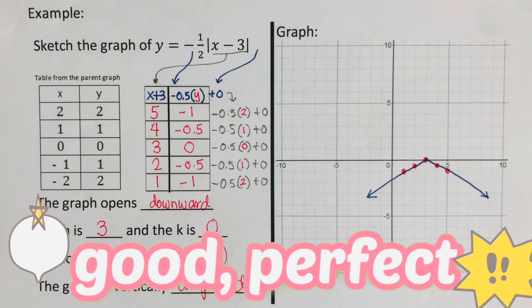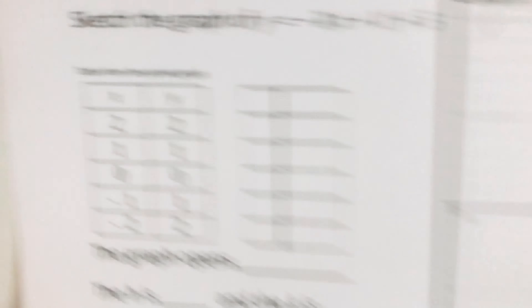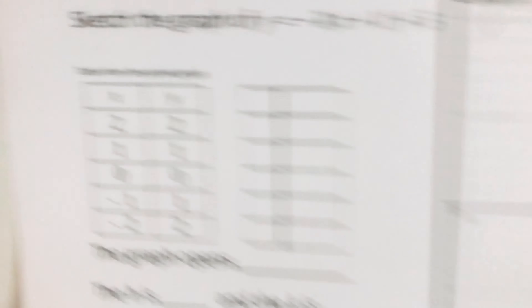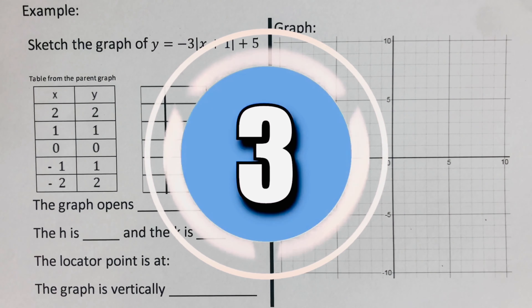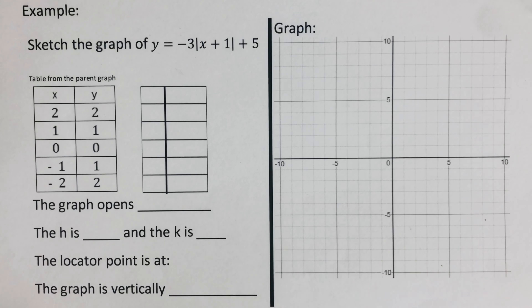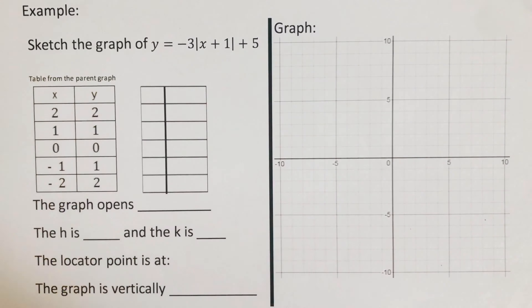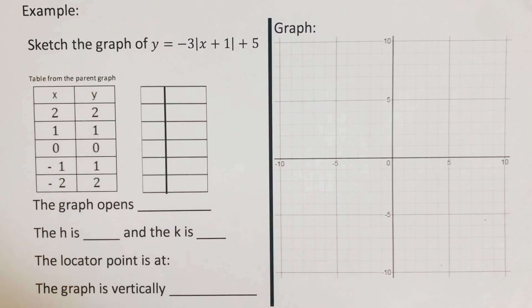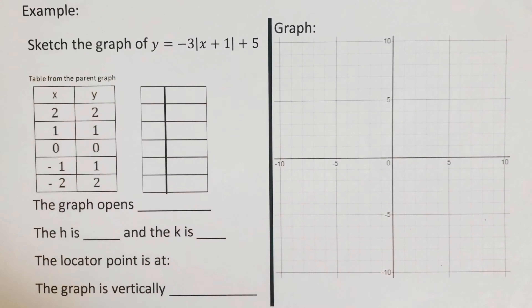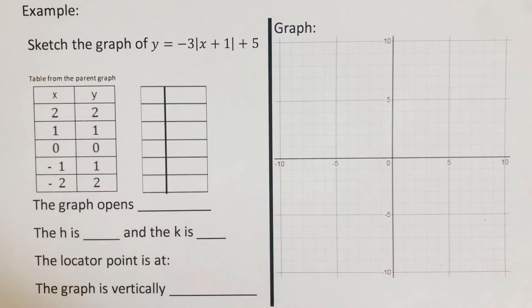We label this graph as y equals negative one-half times the absolute value of x minus 3. On the side, the Desmos version shows the same 5 red dots, confirming that both the paper version and the Desmos version of the graph are the same.